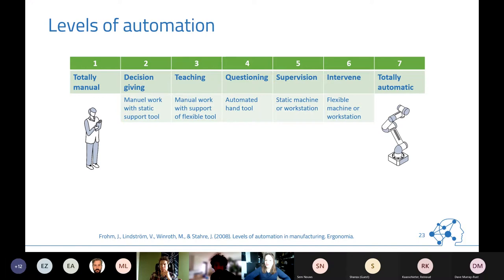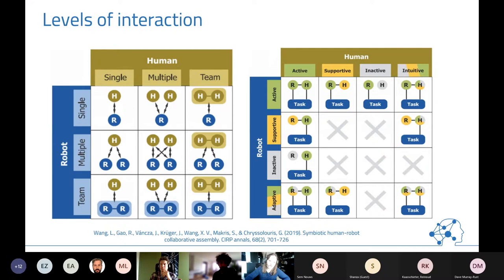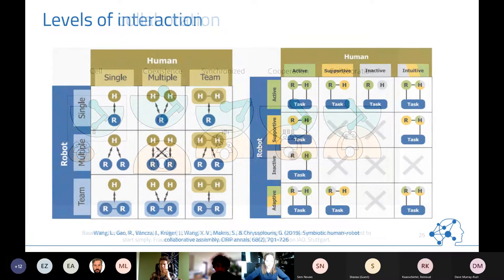I also like the levels of automation — quite old but refined for manufacturing — which defines a spectrum from totally manual to totally automatic, with discrete areas in between. We're especially interested in the supervision-and-intervene case. There is also classification of how humans and robots interact: the levels of interaction, covering both the constellation of groups — multiple humans, multiple robots — and the quality of interaction, from both active to one being supportive or an intuitive handover.